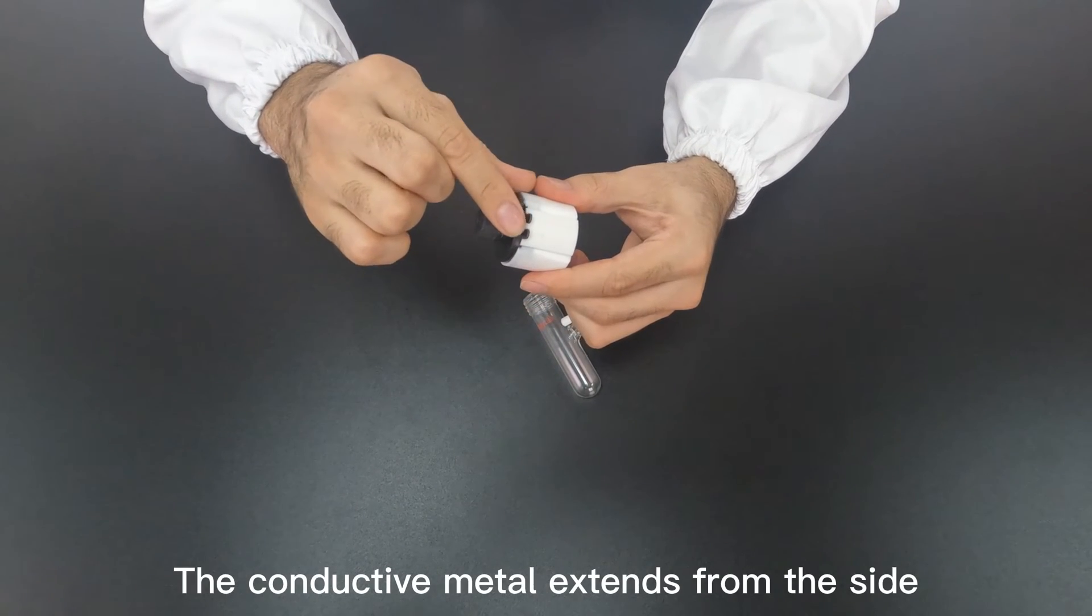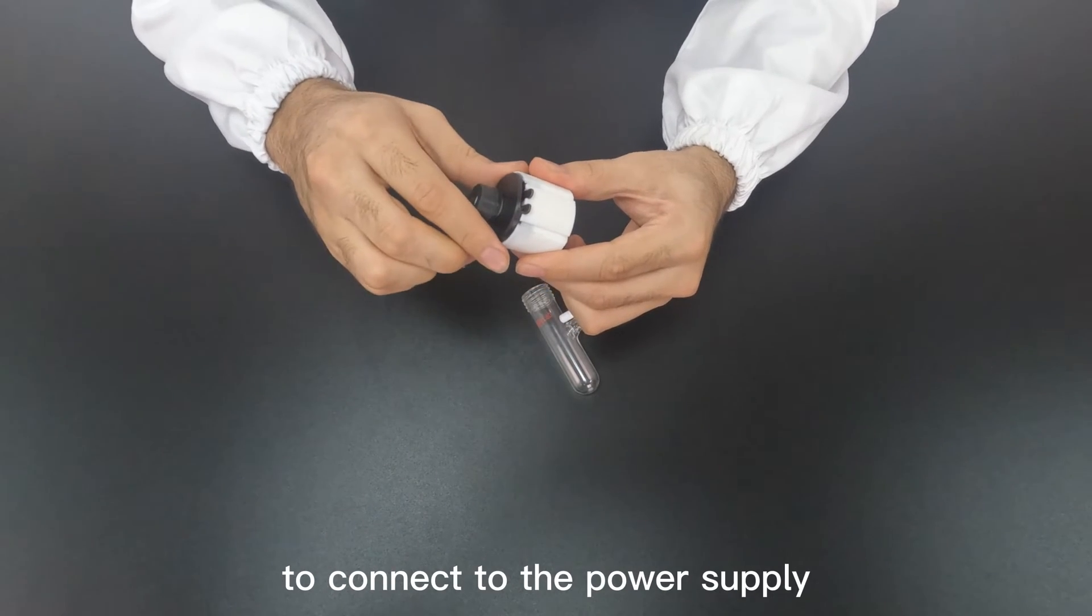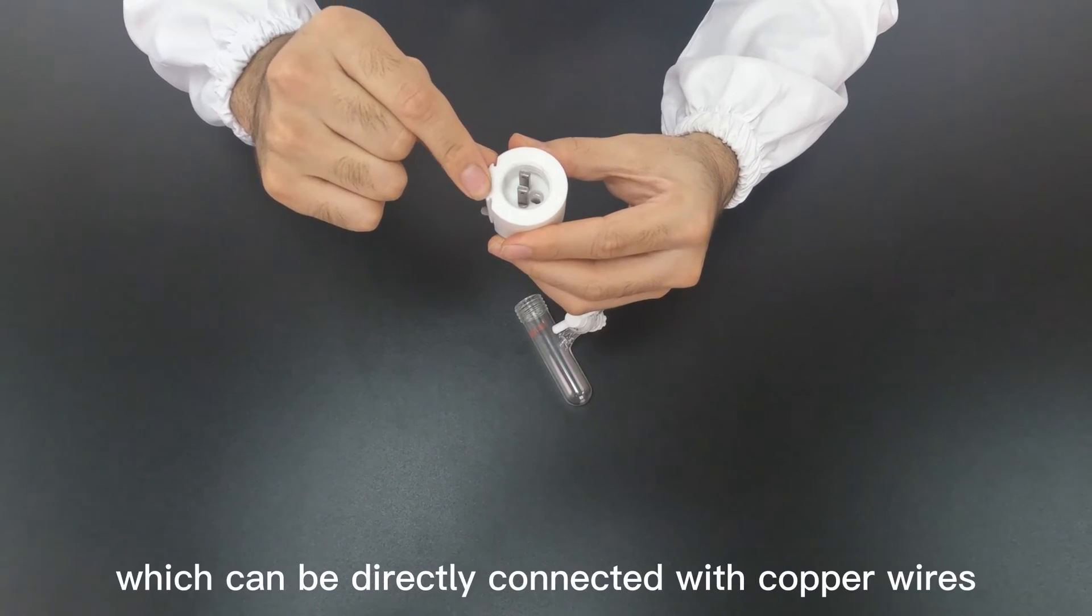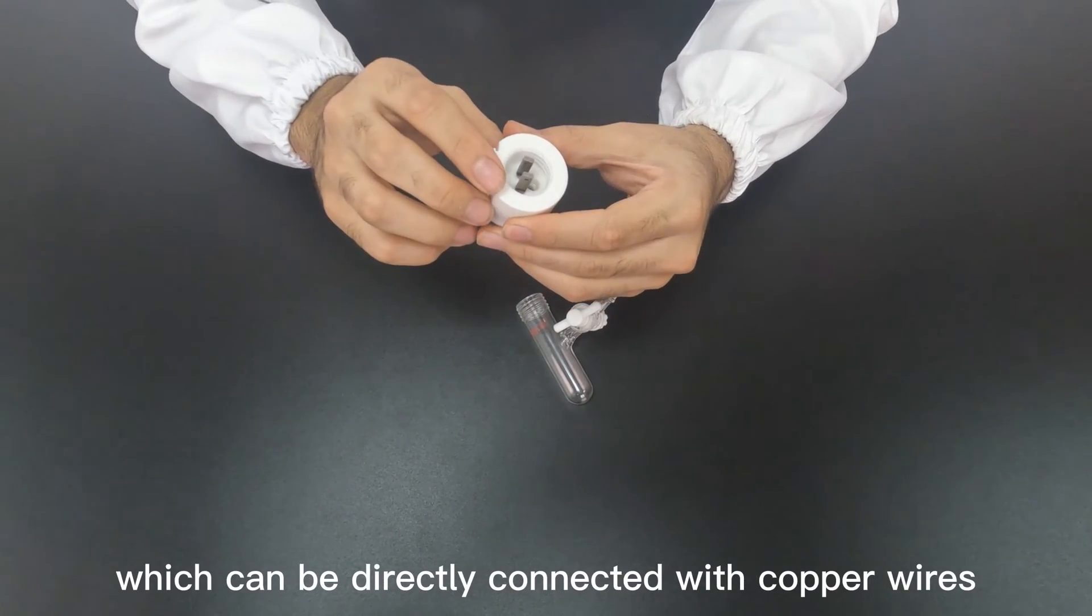The conductive metal extends from the side to connect to the power supply. Its interior is an electrode with small holes which can be directly connected with copper wires.